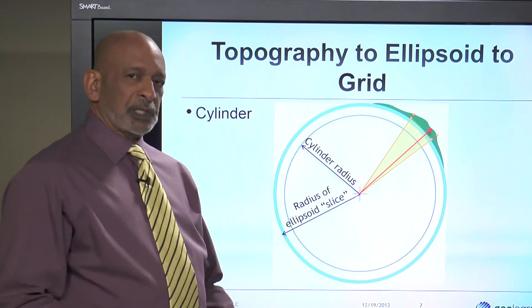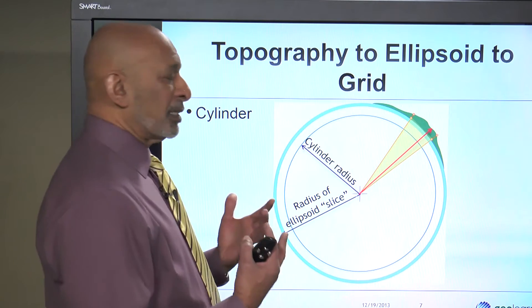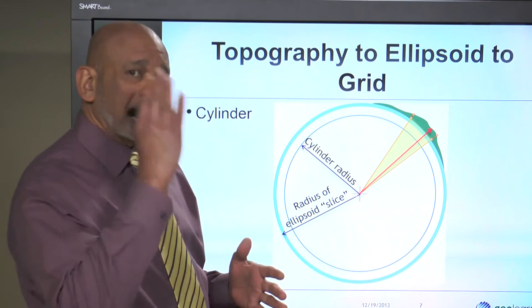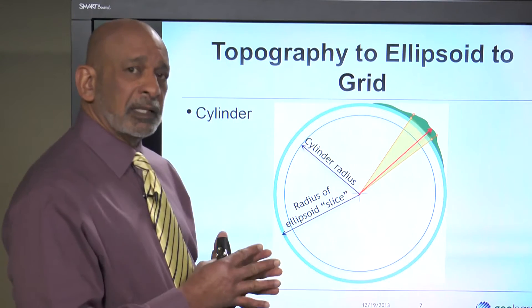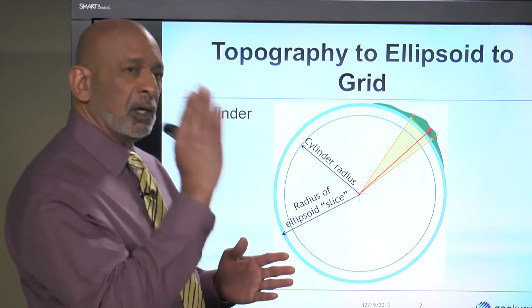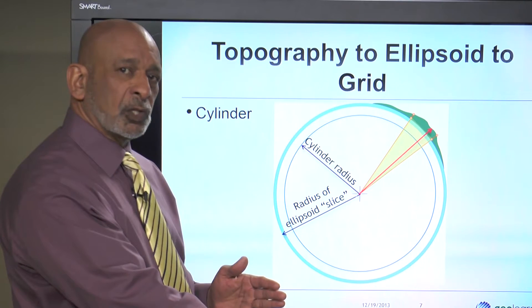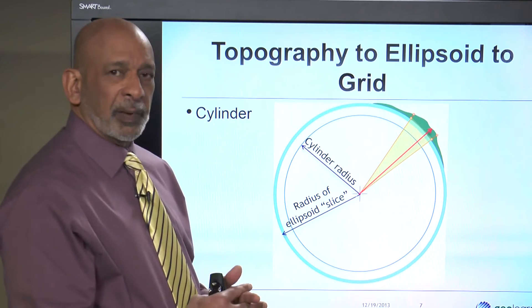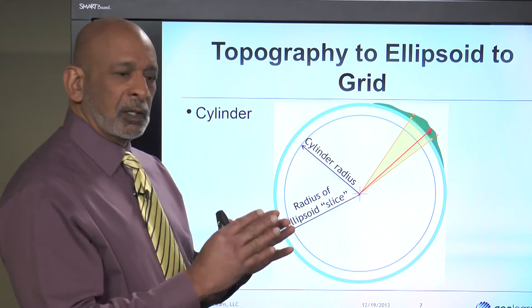Now I say radius of ellipsoid slice, because it's really not the radius of the Earth, except at the dead center, where the section passes through the center of mass of the Earth.